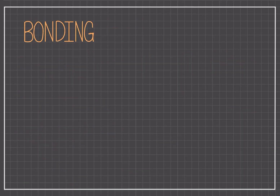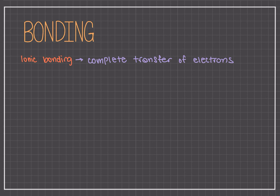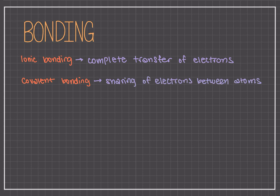So let's get back to talking about polar covalent bonds. How does electronegativity relate to bonding and bond type? Well, ionic bonding is a complete transfer of one or more electrons from one atom to the other. For example, with NaCl, where sodium completely gives one electron to chloride. Covalent bonding is when electrons are shared between two atoms, for example with Cl2, where one chloride and another chloride share electrons.